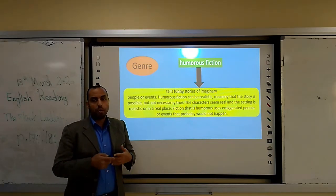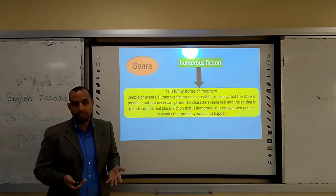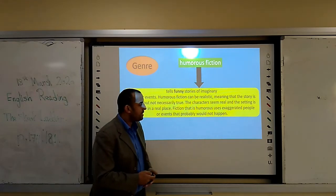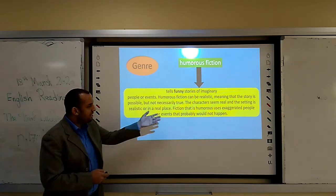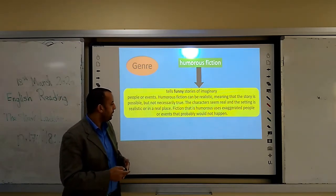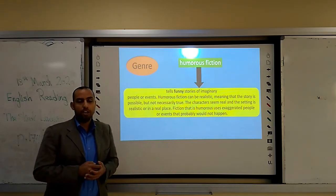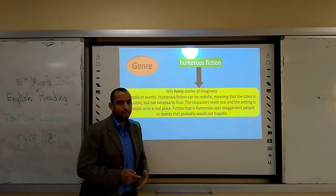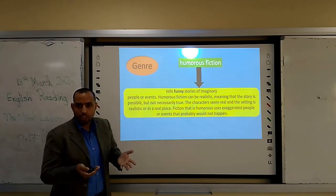The events or people in this story could be happening — it is not impossible to happen. The characters seem real and the setting is realistic or in a real place. Fiction that is humorous uses exaggeration, people or events that probably will not happen. So the features of humorous fiction: it tells funny stories, with unreal people or events, but it could happen.